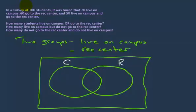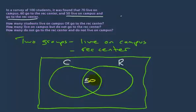When you go through the information given, you want to look for the most specific piece of information. That would be the 50 who live on campus and go to the rec center. The region in both circles represents people who both live on campus and go to the rec center. Since 50 do that, we put 50 right there. The adjacent region represents people who live on campus but do not go to the rec center — that will be the answer to the second question.